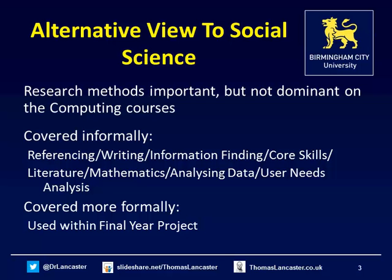Generally, research methods in computing are useful to students because they can feed into the other modules they study and they can help with finding jobs. We tend to cover a lot of general core skills ranging from writing, referencing, finding information, using literature, even ways of analysing data — particularly the maths side. Many students use research methods in their final project, which other disciplines might call a dissertation. They may use literature to decide what kind of software system to develop, or use a survey or user analysis to evaluate the quality of their final product.